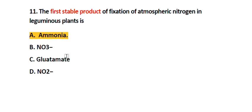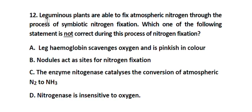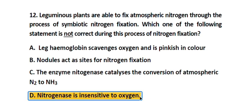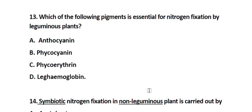Question number 12. Leguminous plants are able to fix atmospheric nitrogen through the process of symbiotic nitrogen fixation. Which one of the following statements is not correct? Option A. Leghemoglobin scavenges oxygen and is pinkish in color. Option B. Nodules act as sites for nitrogen fixation. Option C. The enzyme nitrogenase catalyzes the conversion of atmospheric nitrogen to ammonia. Option D. Nitrogenase is insensitive to oxygen. The correct answer is Option D. Nitrogenase is insensitive to oxygen.